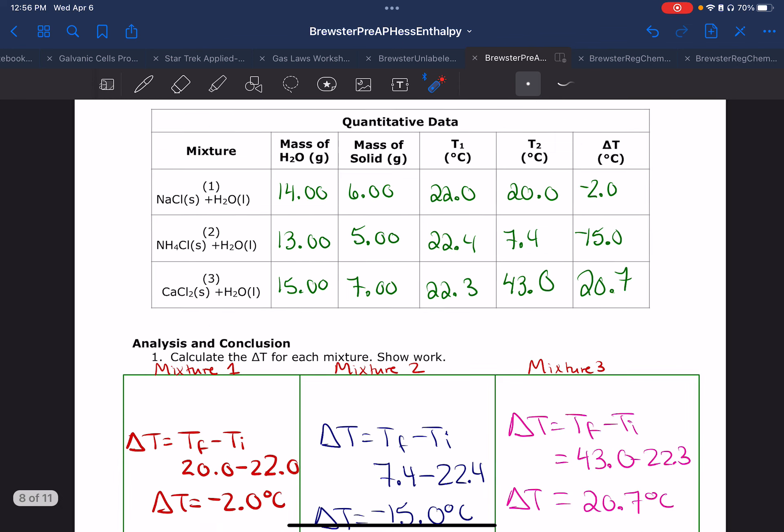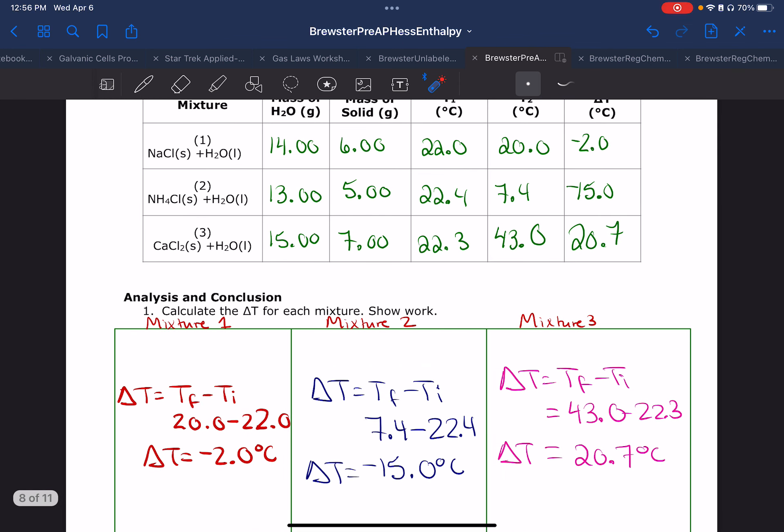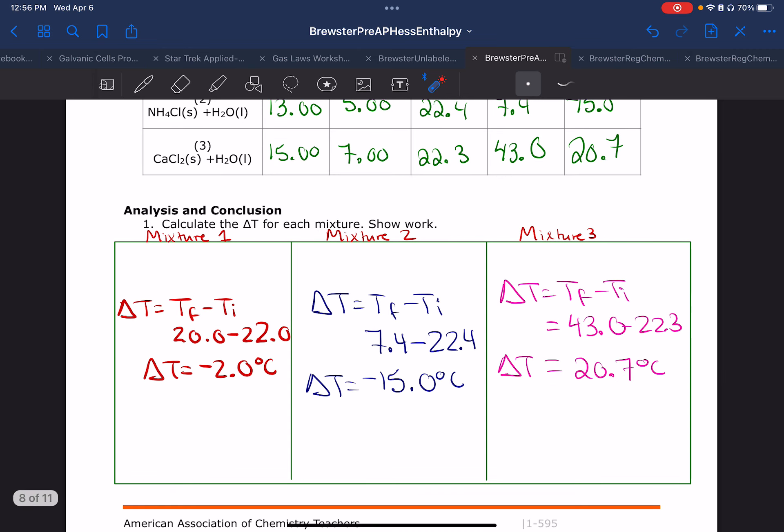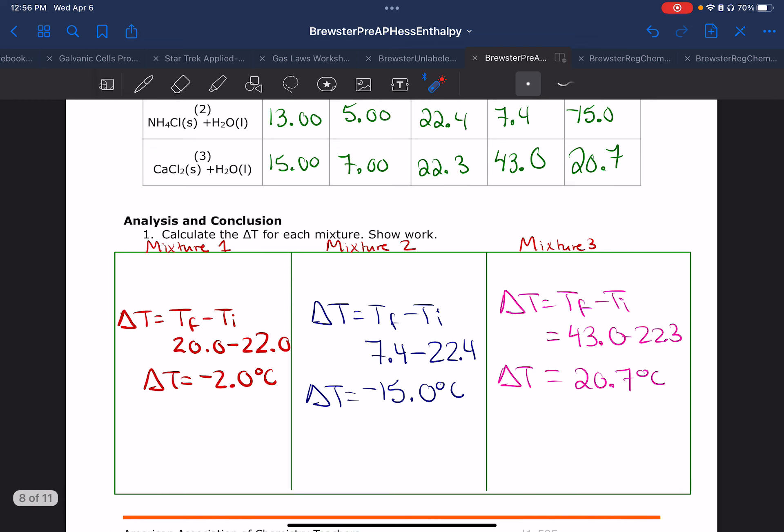And then question number one is asking you to calculate the delta T's. And so I just have mine set up. I'm just taking my numbers from the graph. It's always T final minus T initial until we find out that mixture one and mixture two both have a negative sign for their temperature change. And mixture three is a positive.